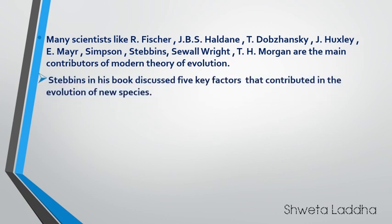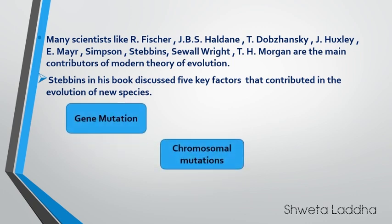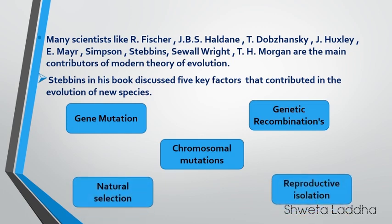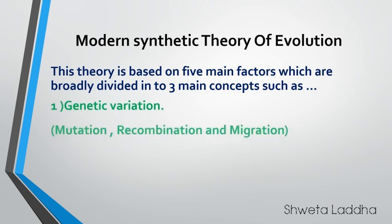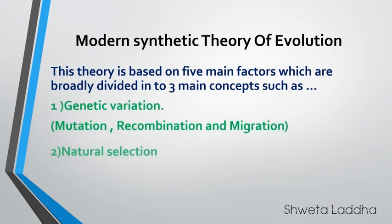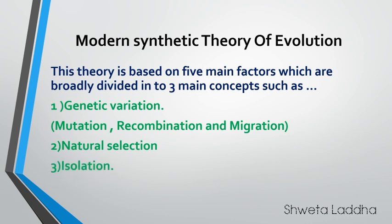Stebbins in his book discusses 5 key factors which contributed to the evolution of new species: gene mutation, chromosomal mutation, genetic recombination, natural selection, and reproductive isolation. We will be dividing these 5 concepts into 3 basic categories: genetic variation (which includes mutations, recombinations, and migration), natural selection, and reproductive isolation.